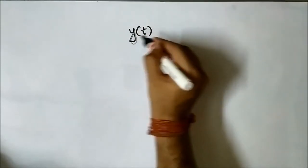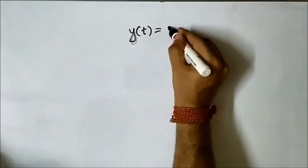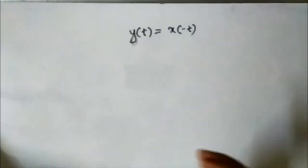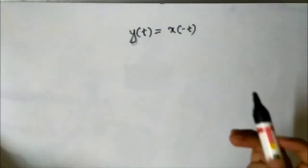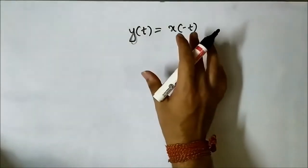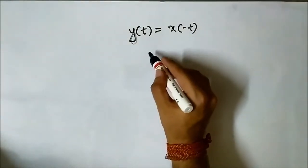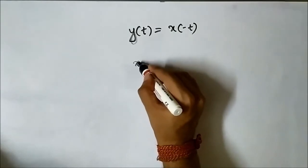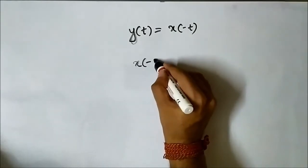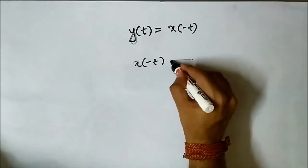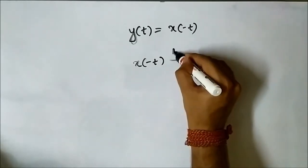We concluded that the time-reversed signal is the mirror image of the original signal. The time-reversed signal x(-t) is the mirror image of the original signal.